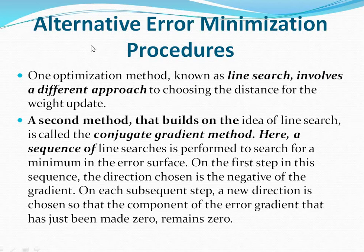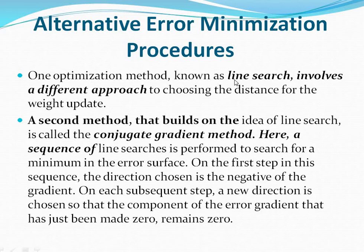The next advanced topic in artificial neural networks is alternative error minimization procedures. Here we are trying to minimize the error. One optimization method is line search, which involves a different approach to choosing the distance for the weight update. The second method is built on line search — the conjugate gradient method — where a sequence of line searches is performed to search for a minimum in the error surface.